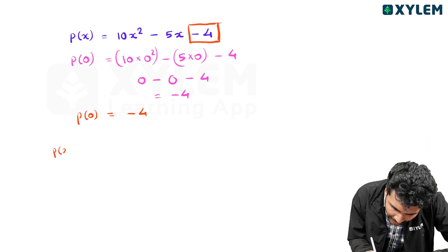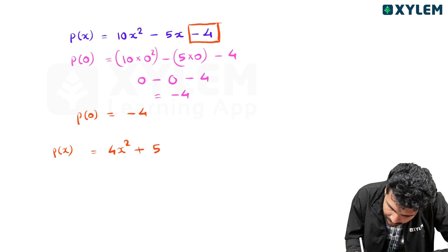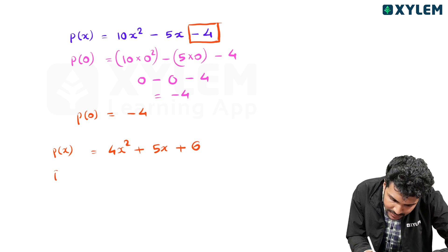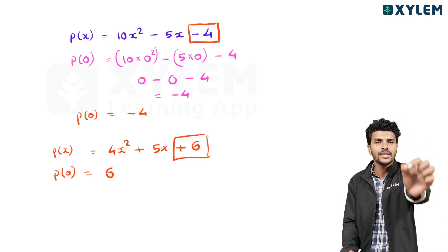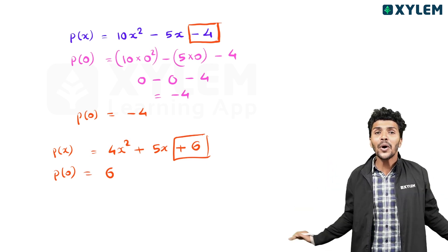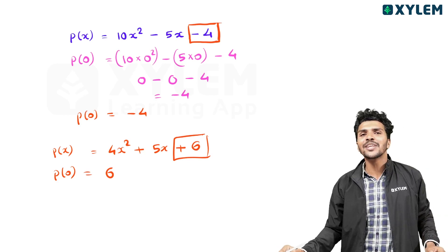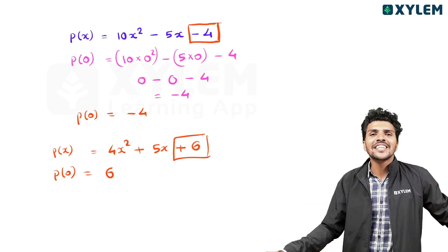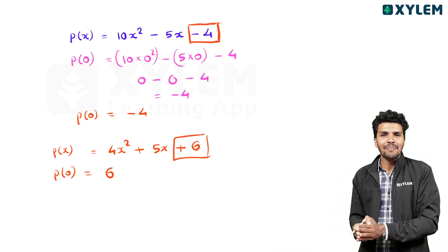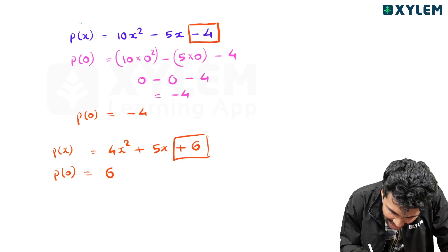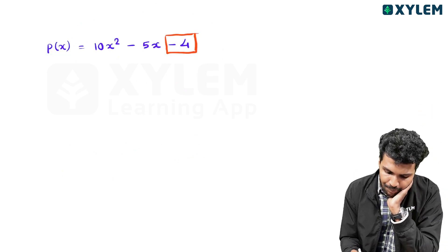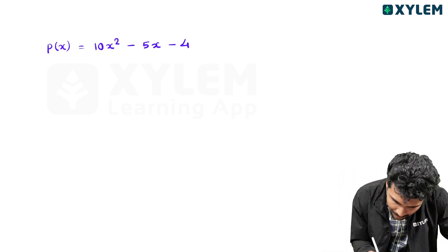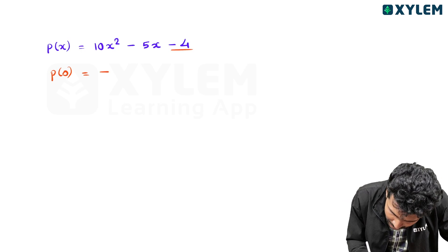P of x is 4x squared minus 5x plus 6. That means P of zero: substitute zero — we get zero minus zero plus 6, so P of zero equals 6. For another polynomial, P of zero gives minus 4. Simple.